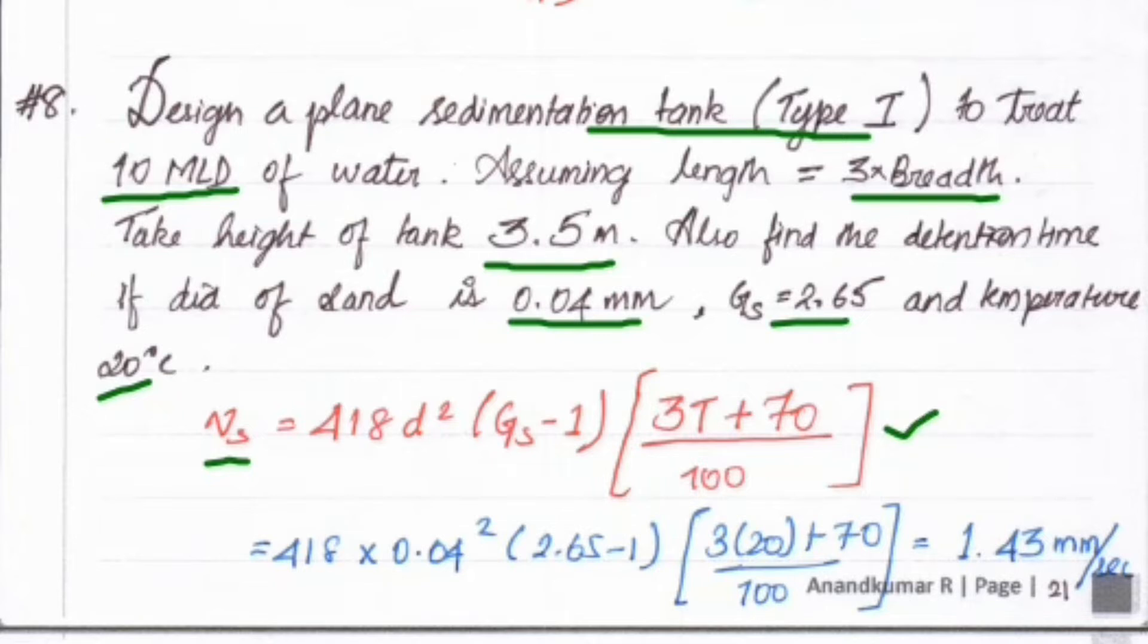The diameter is given as 0.04, Gs value is 2.65, and temperature is 20 degrees Celsius. Substituting all values: 418 × 0.04² × (2.65 - 1) × [3(20) + 70]/100. Solving this we get 1.43 mm per second.